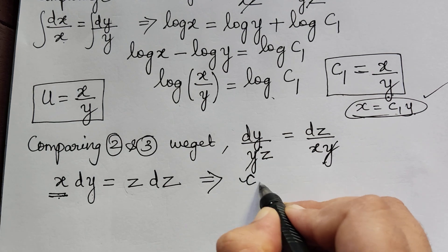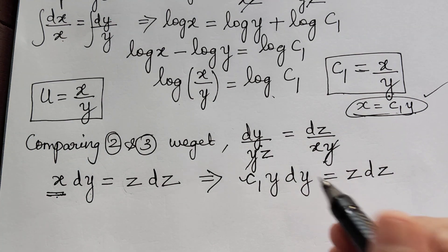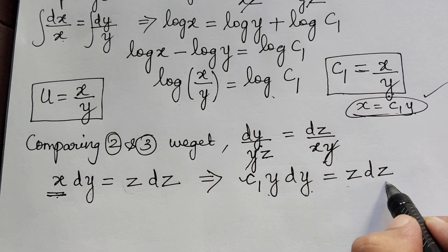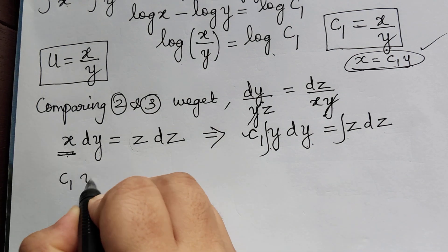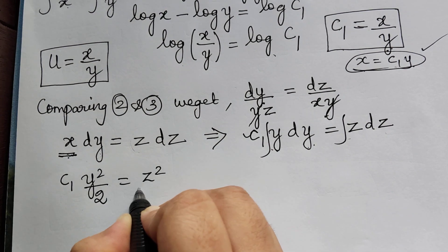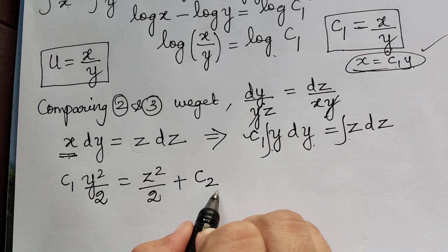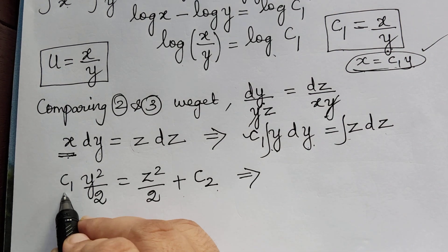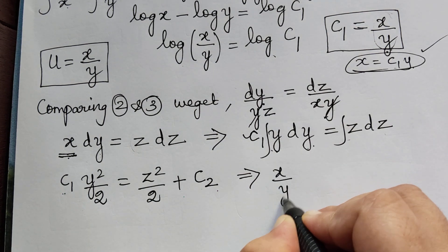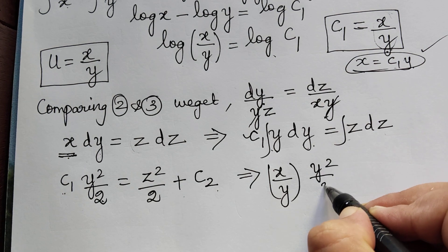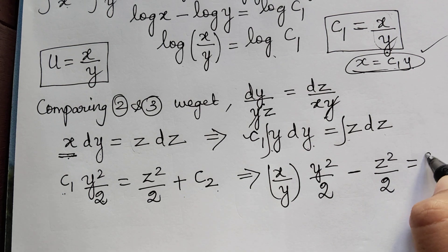With this substitution, we have c1·y dy equal to z dz. Now we can integrate both sides easily since each side has only one variable. Integrating gives c1 times y squared by 2 equal to z squared by 2 plus a new constant c2. Now replacing c1 with x by y, we get (x/y) multiplied by y squared by 2, and bringing z squared by 2 to the left gives minus z squared by 2 equal to c2.